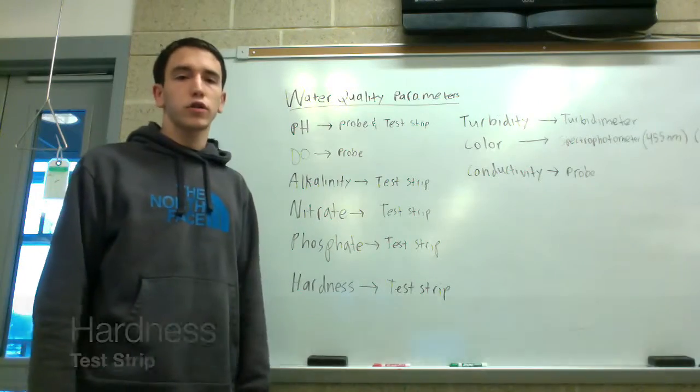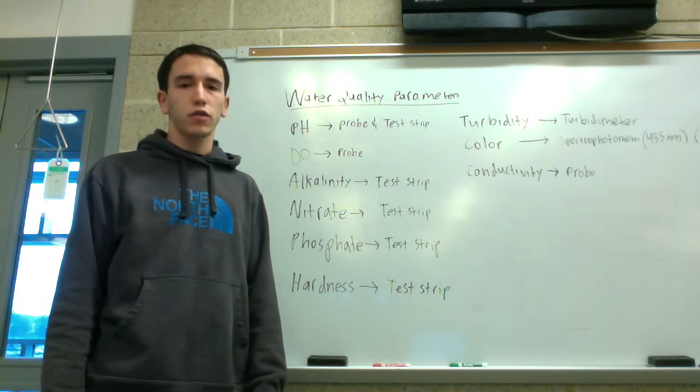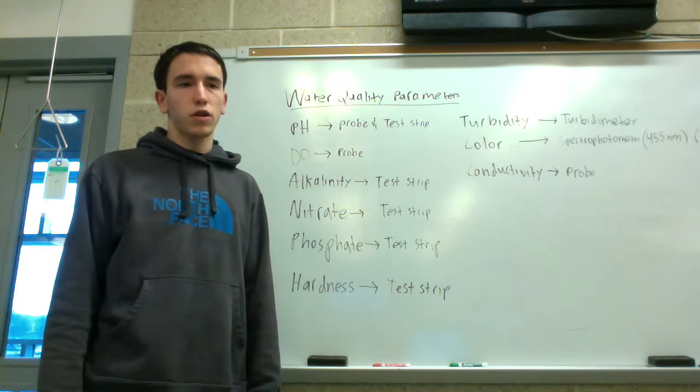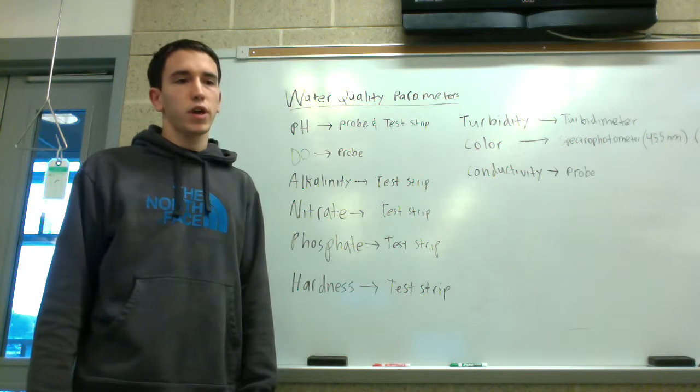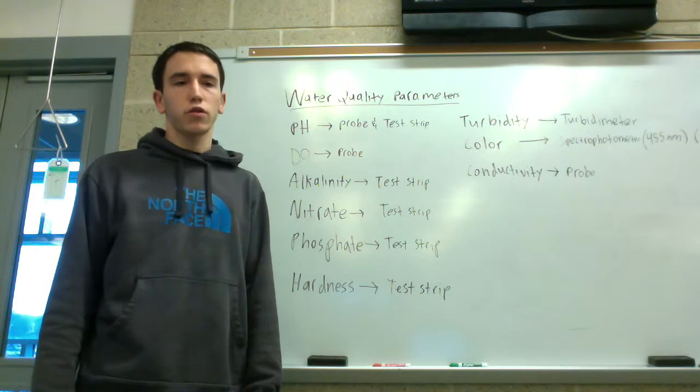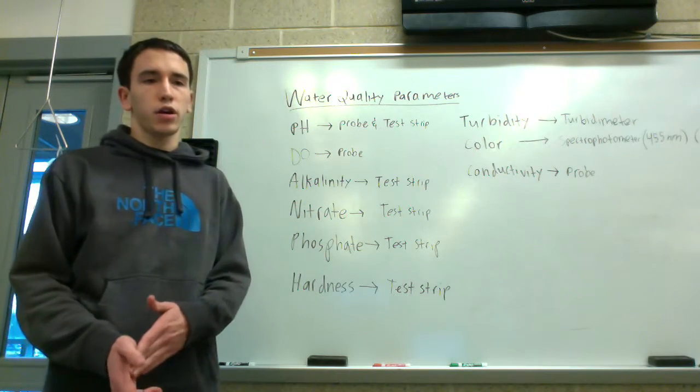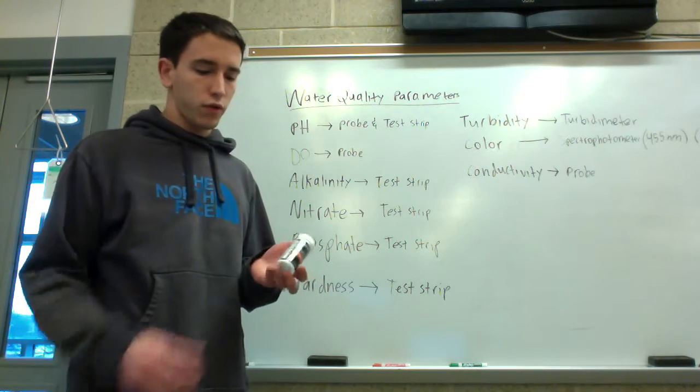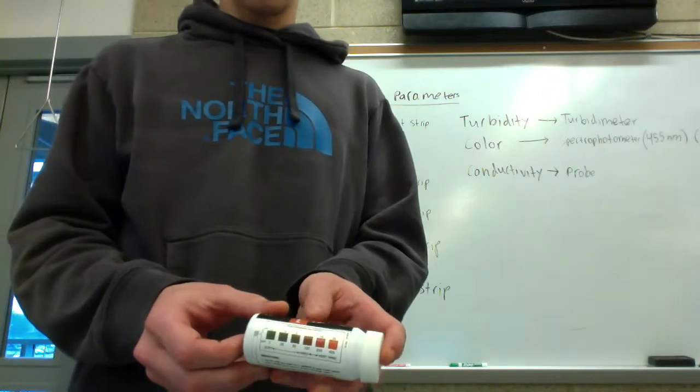Next you'll measure the hardness of your water sample. Hardness is caused by the presence of divalent cations in the water, which combine with soap to form precipitates and combine with anions to form scales. The main cations that cause hardness are calcium, magnesium, ferrous iron, and manganese ions. Hardness is measured using a test strip. Dip it in the water and compare the color on the side after the allotted time.